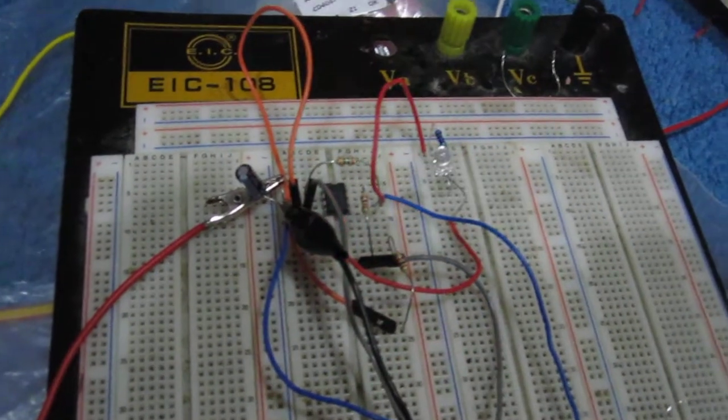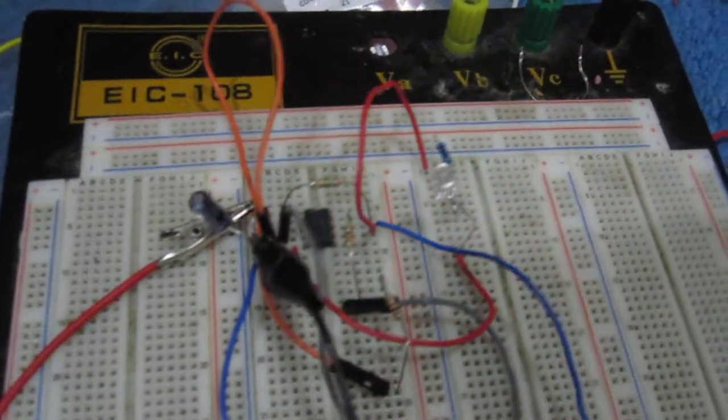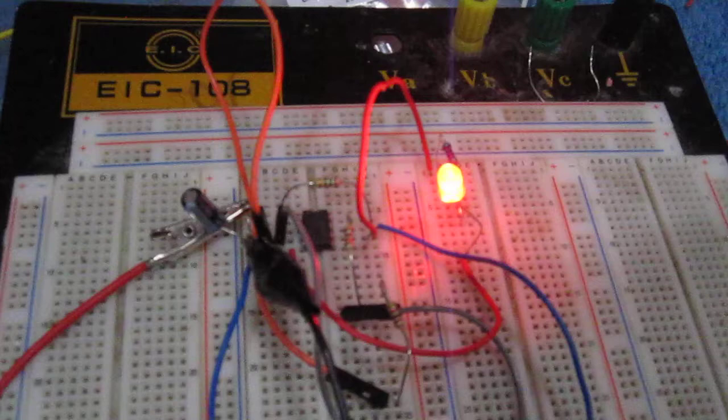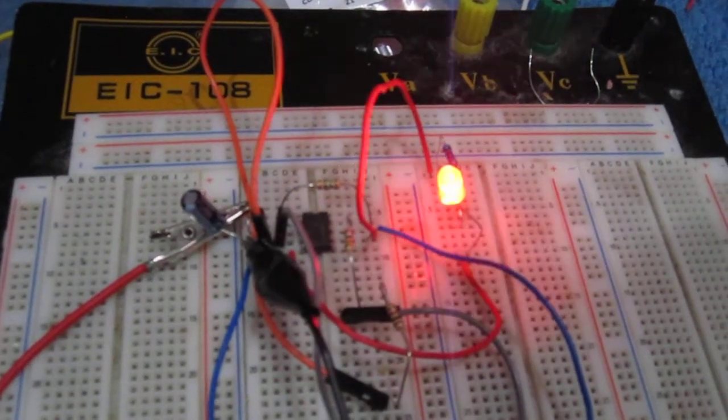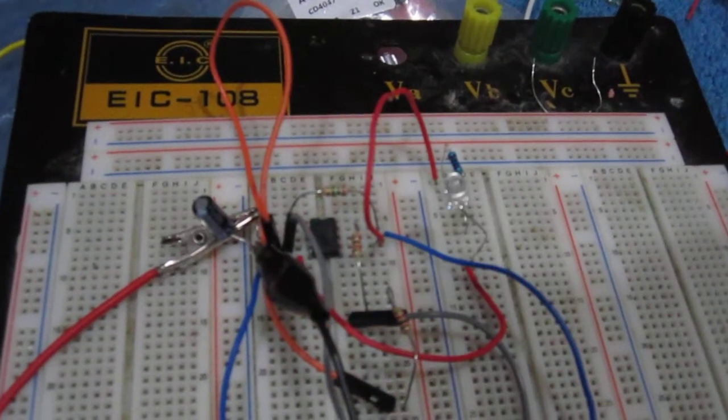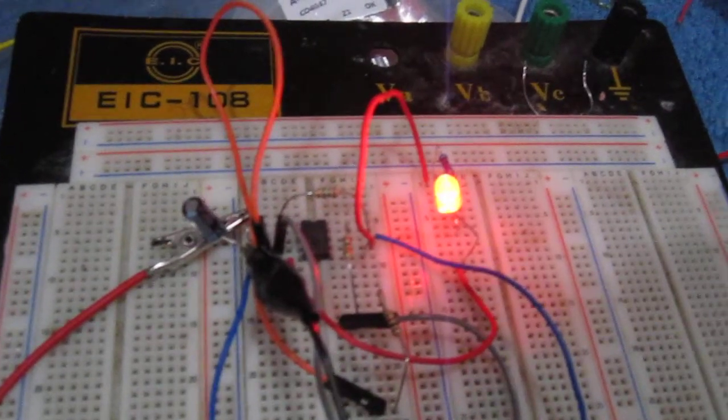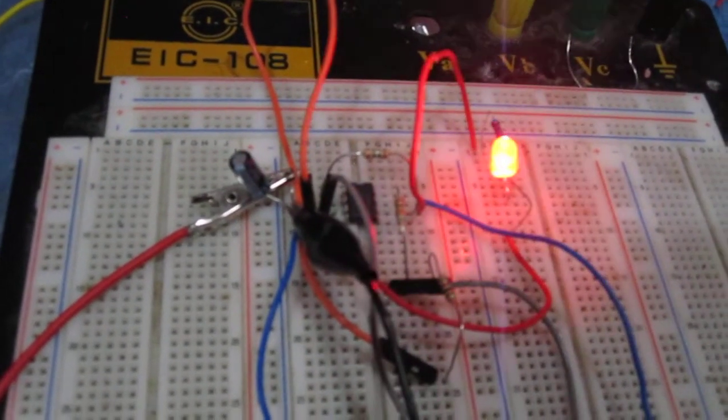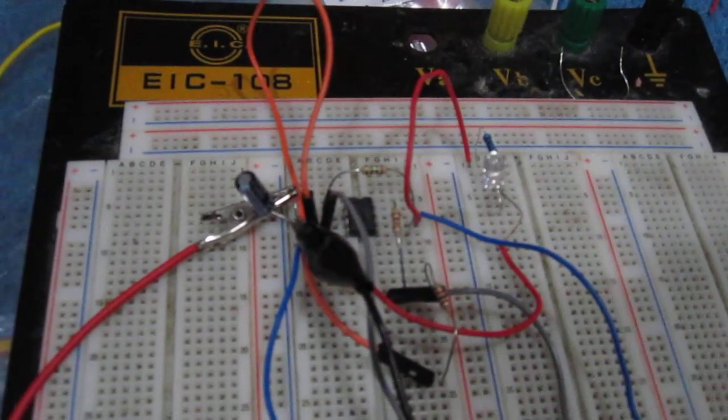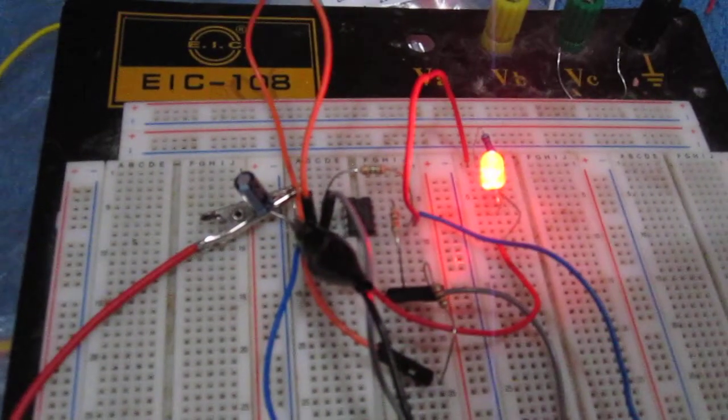This is how an astable multivibrator works. The LM741 op-amp functions as a comparator that has two inputs: an inverting terminal and a non-inverting terminal. When the inverting terminal voltage is greater than the non-inverting terminal, the output of the op-amp goes low. When the voltage at the inverting terminal is less than at the non-inverting terminal, the output goes high.